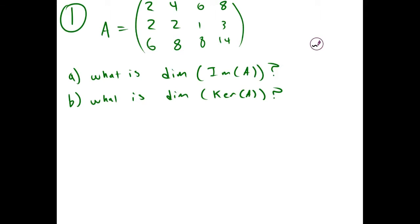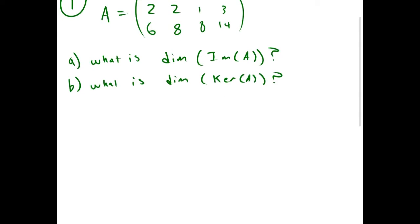First, we're going to find the dimension of the image. We're going to do that by putting this matrix in reduced row echelon form.